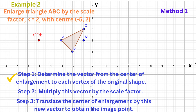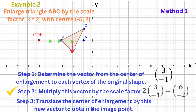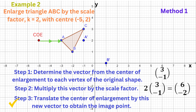To get from the centre of the enlargement to vertex B, we move three units to the right and one unit down — that's the vector (3, -1). Multiply this vector by the scale factor 2, and we get (6, -2), which means that to get from the centre of the enlargement to the image of B, we move six units to the right and two units down.